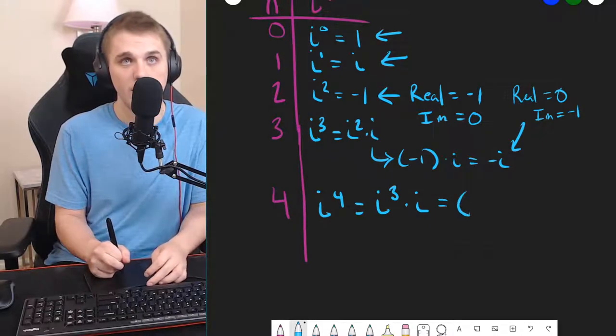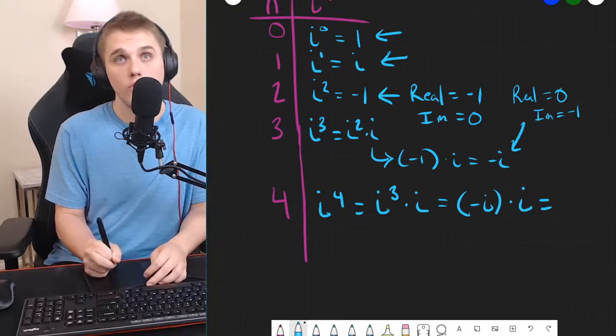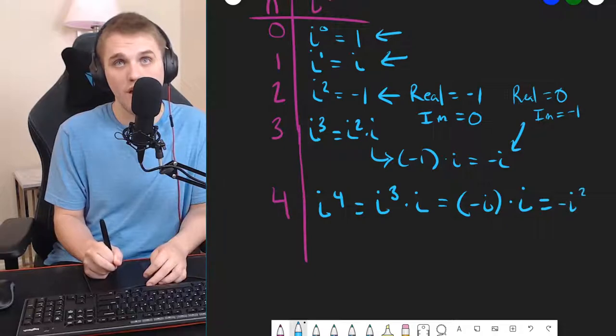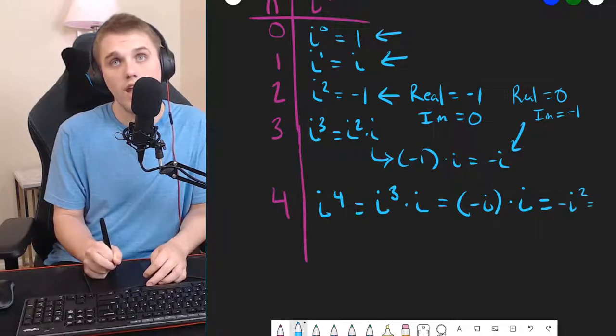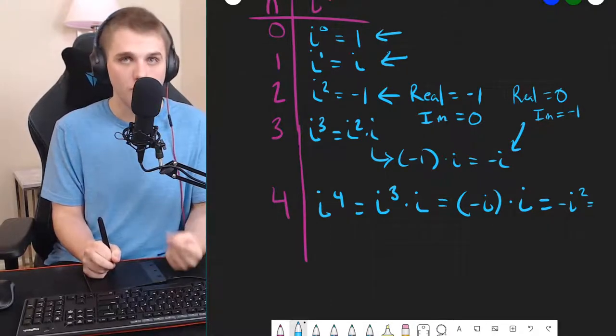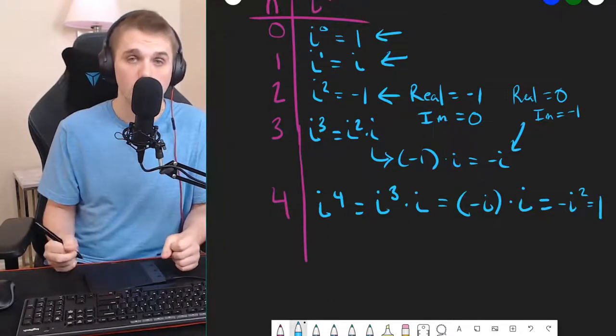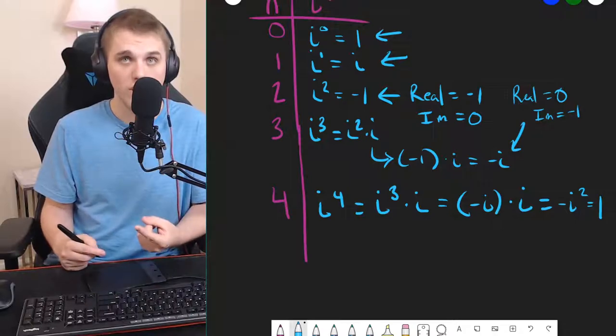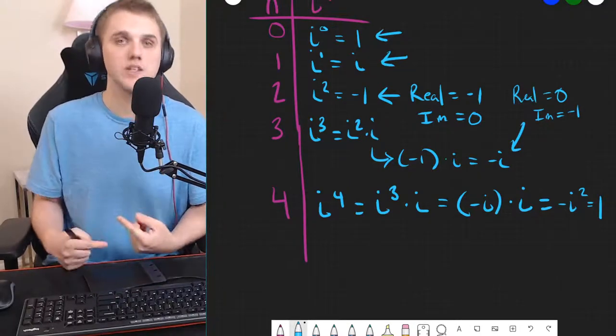So, this is negative i times i, which from here we can see is negative i squared. And negative i squared is negative negative 1, which is just 1. i squared is negative 1, so negative i squared is positive 1.